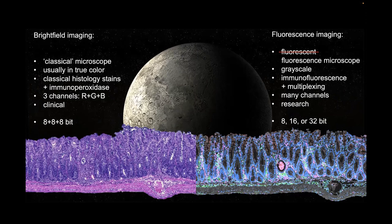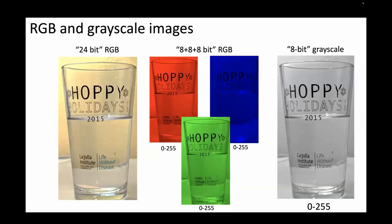On the other hand, fluorescence imaging — and by the way, your microscope is a fluorescence microscope, not a fluorescent microscope; if someone spilled something on it, it becomes a fluorescent microscope, but that's a bad thing — they are grayscale images that can have 8, 16, or 32 bits. We can color grayscale images any way we like, but they're really composed of those components.